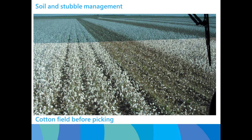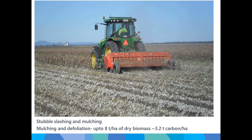Soil and stubble management is directly related to biomass carbon return from residues. After picking, stubble gets mulched — the next operation after harvesting. The days of raking and burning stubbles are a thing of the past. Mulching along with defoliation can return up to 8 tonnes of dry biomass, approximately 3.2 tonnes of carbon per hectare.